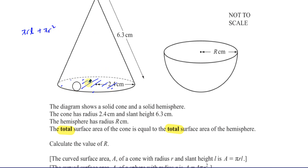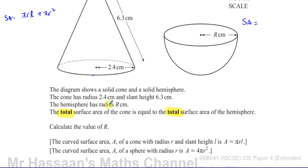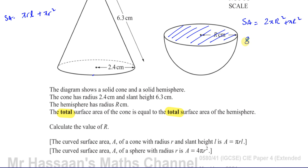The base area is πR². That's the total surface area for this cone. For the hemisphere, 4πR² is the total surface area of a complete sphere. Since this is half a sphere, you have 2πR². But again, because it's solid, you also have the flat circular base, which is πR². So the total surface area of a solid hemisphere is 3πR².